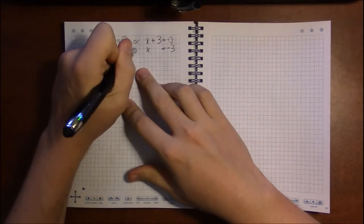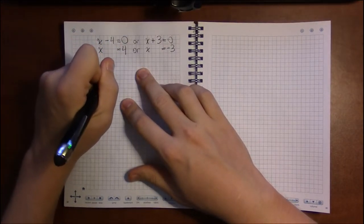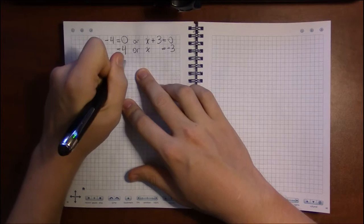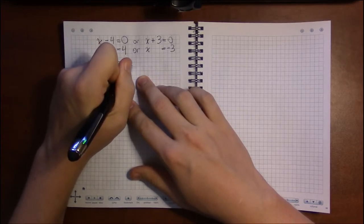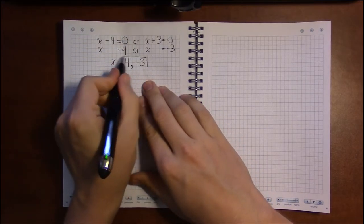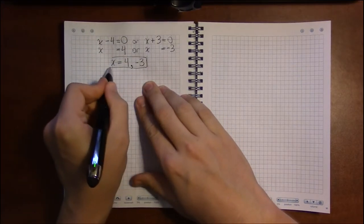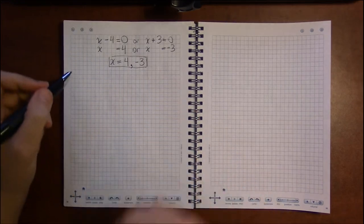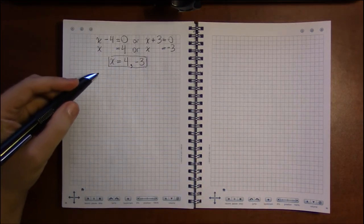So I have two solutions for this quadratic: I have the solution x equals 4 and the solution x equals minus 3. And since I'm lazy, I'll just list them out: 4, minus 3. And those are the two solutions for this quadratic.